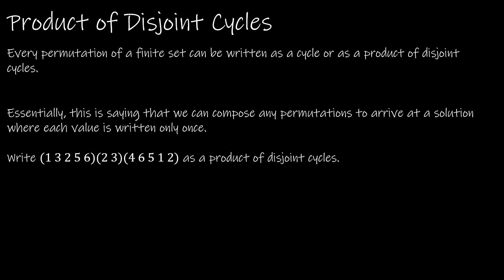So essentially this property is saying we can compose the functions: one goes to two, two to three, three to two, two to four, four stays, four to six, six back to one. Then three stays, three to two, two to five, five to one, one to three. And then six to five, five to six. So this first property is saying that anytime you have a product of cycles, you can write it as a product of disjoint cycles — disjoint meaning they don't share any elements in common.